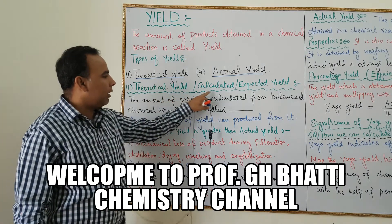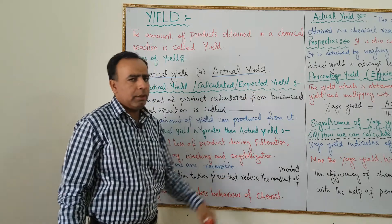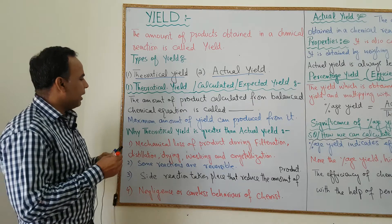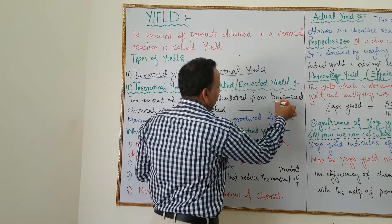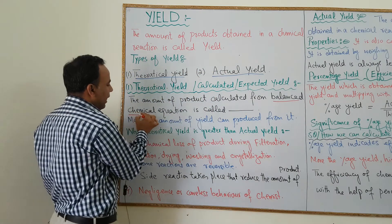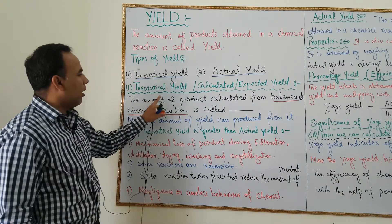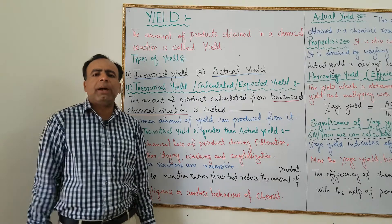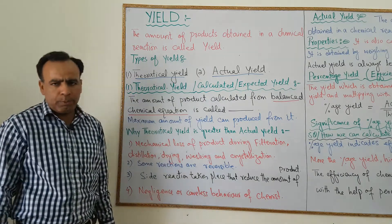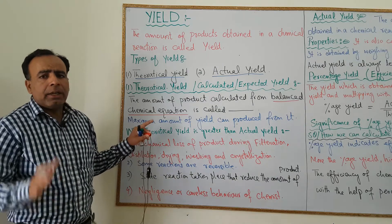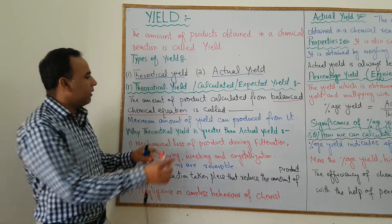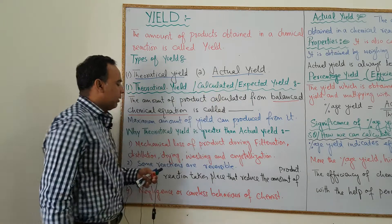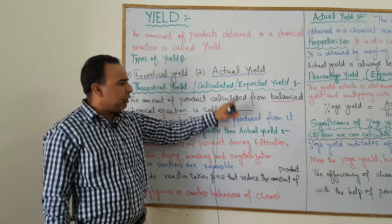Theoretical yield is also called calculated yield or expected yield. It is the amount of product calculated from the balanced chemical equation. When we calculate the amount of product from the balanced chemical equation, that kind of yield is called theoretical yield. In this type, the maximum amount of product can be obtained, and that is why theoretical yield is always greater than actual yield.